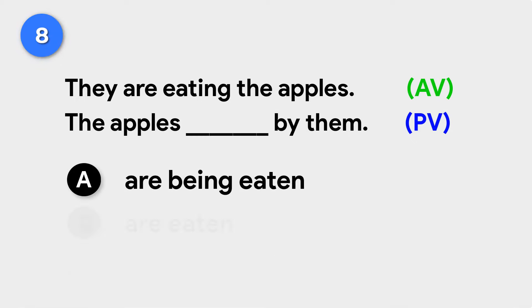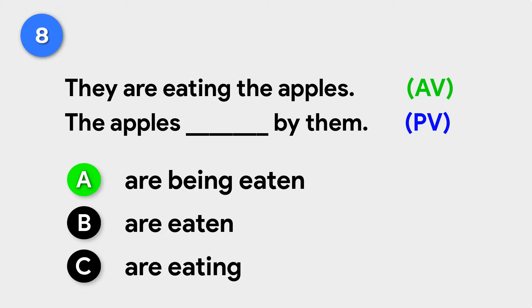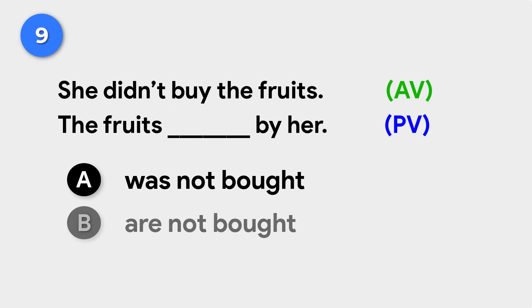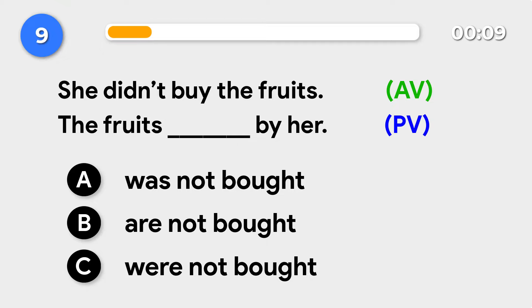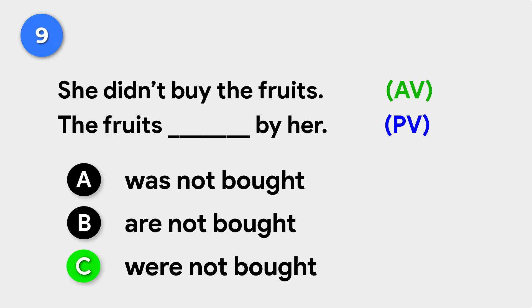They are eating the apples. → The apples are being eaten by them. She didn't buy the fruits. → The fruits were not bought by her.